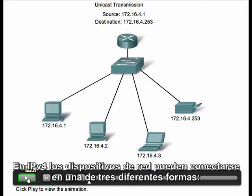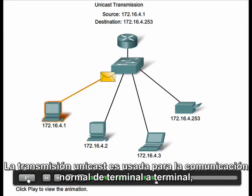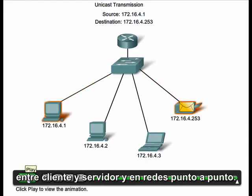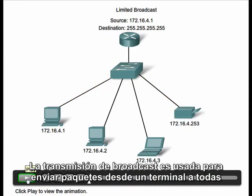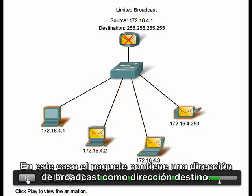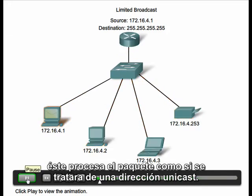In an IPv4 network, hosts can communicate in one of three different ways: unicast, broadcast, and multicast. Unicast transmission is used for normal host-to-host communication in both a client-server and a peer-to-peer network. Unicast packets use the host address of the destination device as the destination address in the IP packet. Broadcast transmission is used to send packets from a host to all other hosts on a network, containing a broadcast address as the destination. When a host receives a packet with the broadcast address as the destination, it processes the packet as it would a packet to its unicast address.